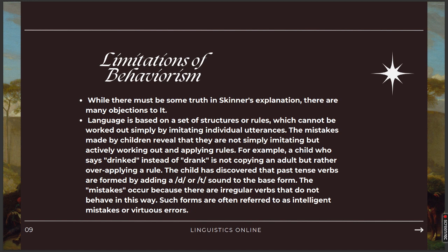Language is based on a set of structures or rules which could not be worked out simply by imitating individual utterances. The mistakes made by children reveal that they are not simply imitating but actively working out and applying rules. For example, a child who says 'drinked' instead of 'drank' is not copying an adult but rather over-applying a rule. The child has discovered that past tense verbs are formed by adding a '-d' or '-t' sound. The mistakes occur because there are irregular verbs which do not behave in this way. Such forms are often referred to as intelligent mistakes or virtuous errors.